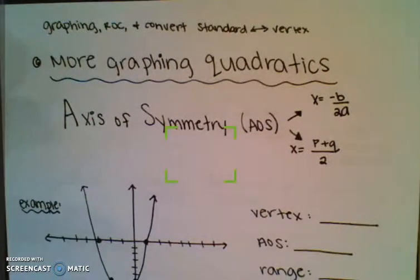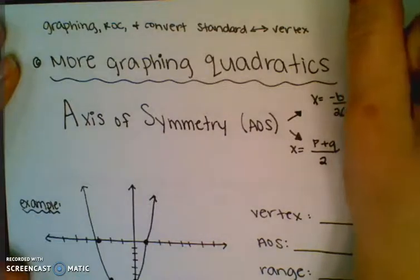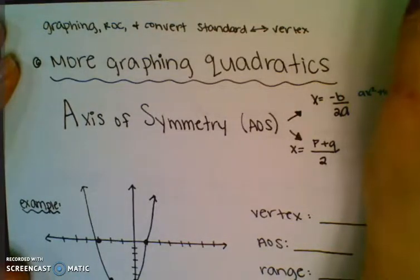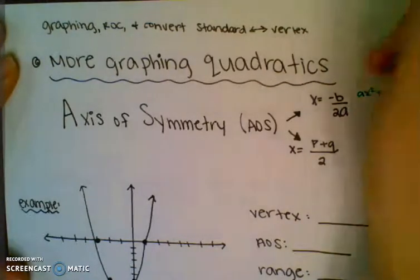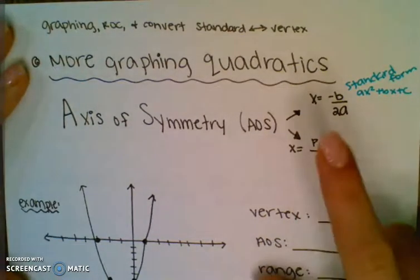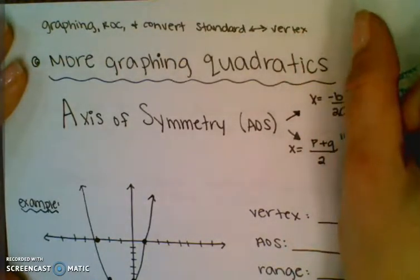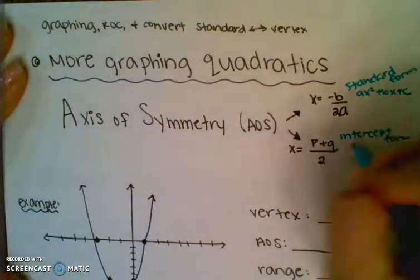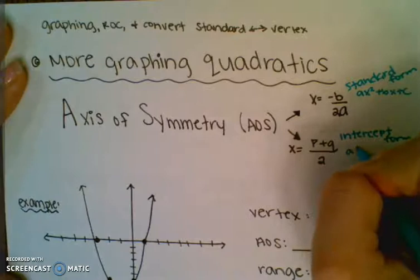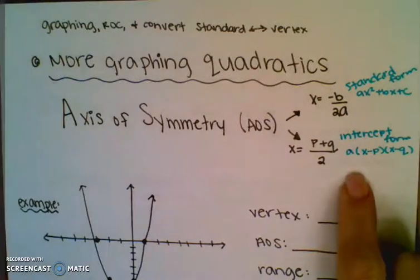The first thing you have to remember is your axis of symmetry. There are two ways to find that. You can either use x equals negative b over 2a, and that's when it's in standard form — that's when it looks like ax squared plus bx plus c. If it is in intercept form — that's when it looks like it's factored, so it'll be like a(x minus p)(x minus q) — you use the other formula.